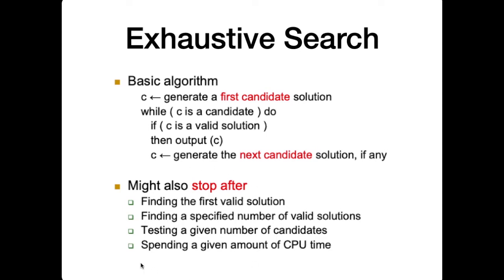There are several stopping criteria for this design strategy. The first stopping criteria is if ever a valid solution is found, then stop the algorithm. The second stopping criteria is if a specified number of valid solutions is found. Here, the specified number could be part of the input parameter and problem definition.